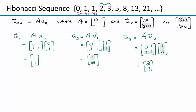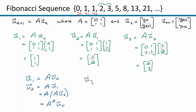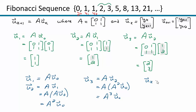Now, you've probably seen this pattern with difference equations. u sub 1 equals A times u sub 0. u sub 2 equals A times u sub 1 equals A squared times u sub 0. u sub 3 equals A times u sub 2 equals A cubed times u sub 0. So in general, u sub k equals A to the k times u sub 0.